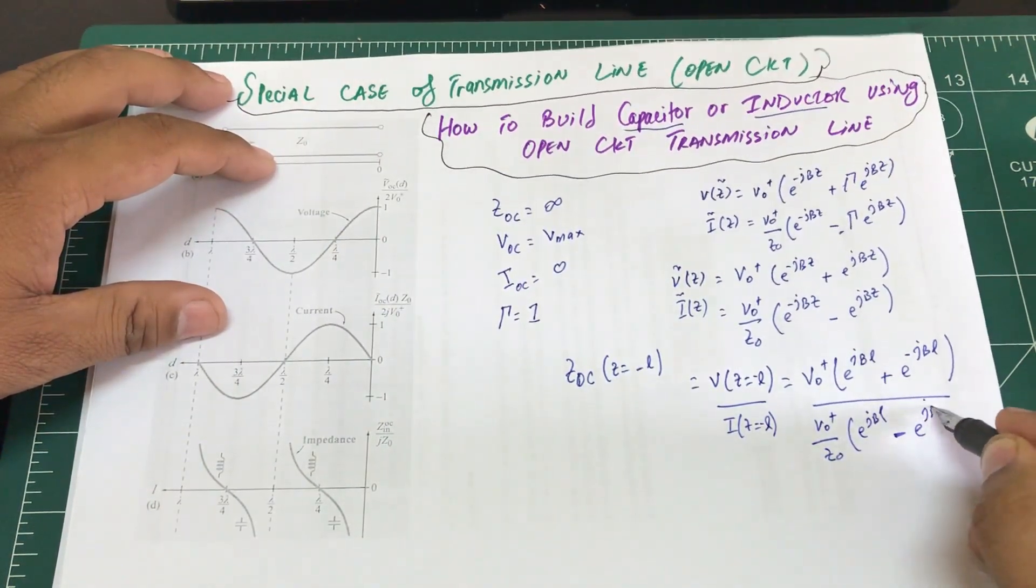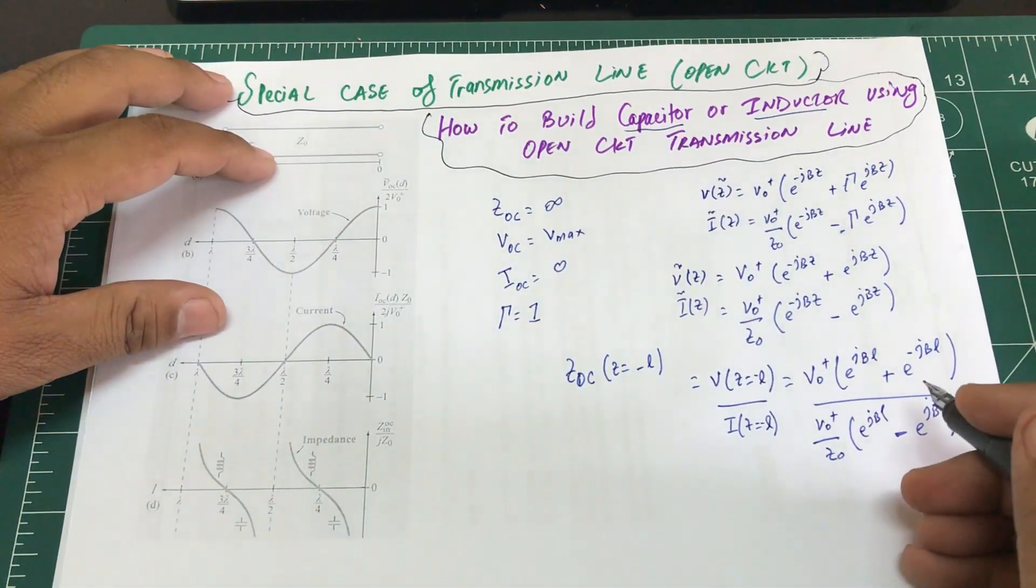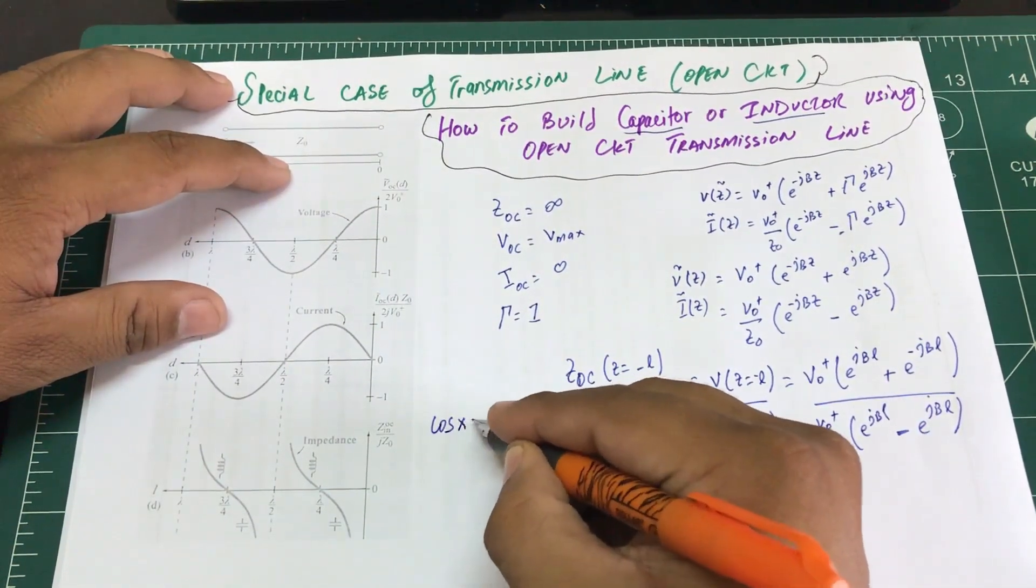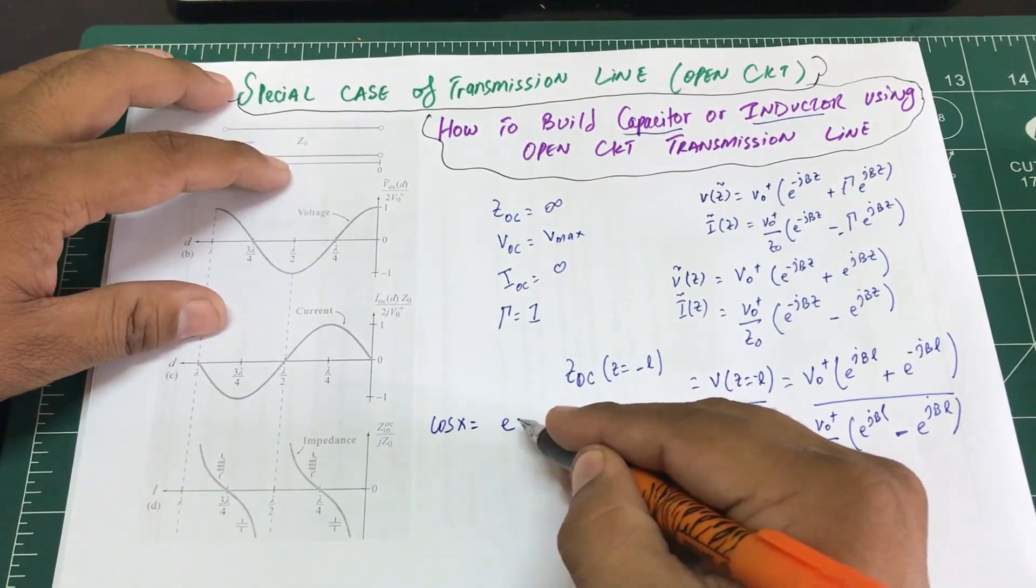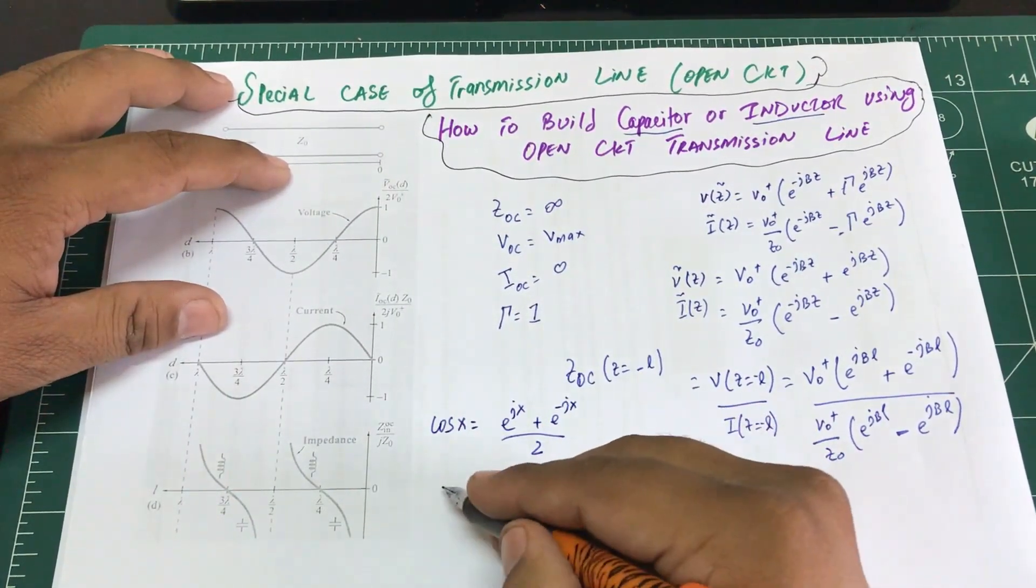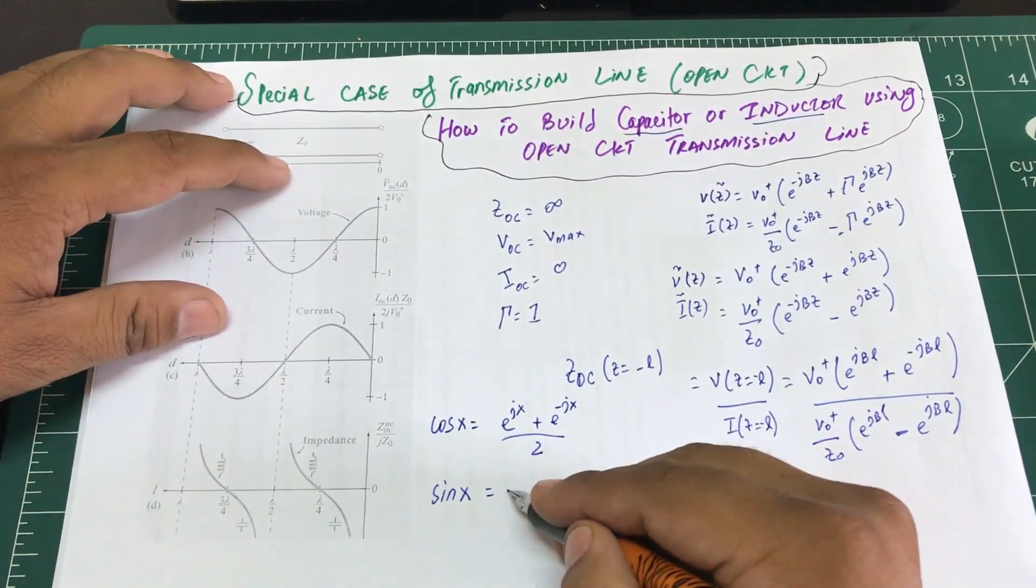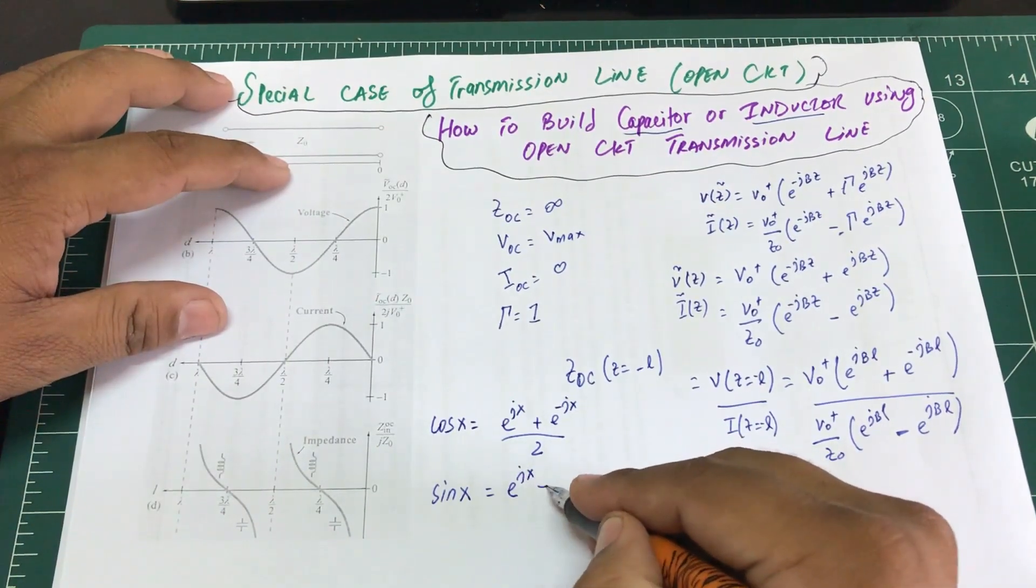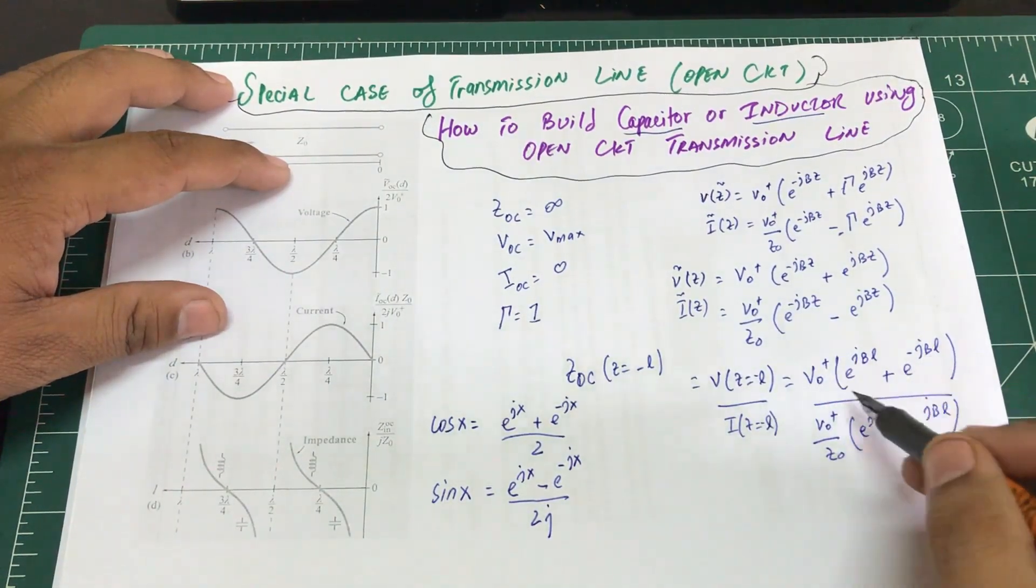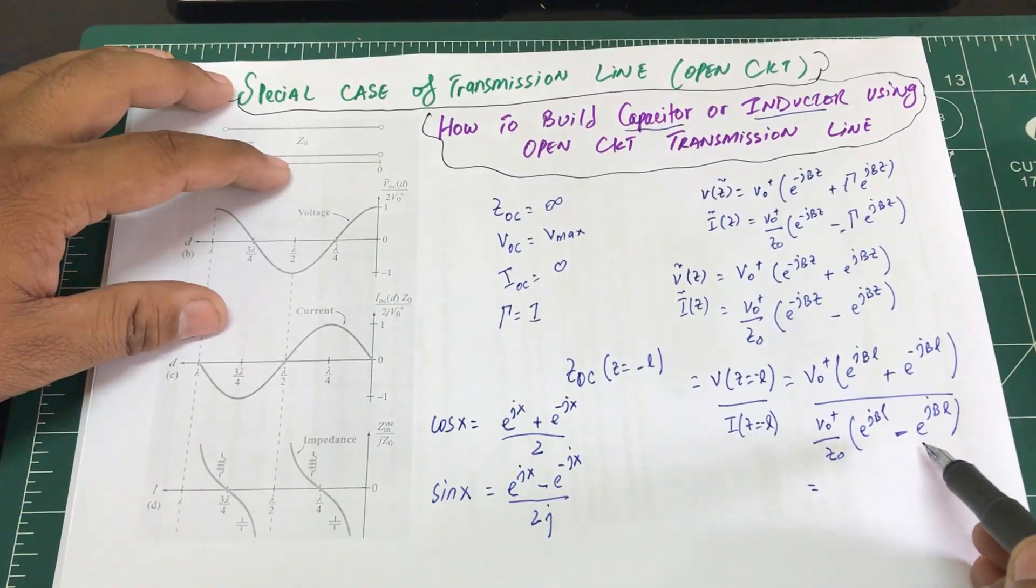I'm going to do exactly the same thing. Let's look at the definition of cos: cos(x) is given as [e^(jx) + e^(-jx)]/2. Sin(x) you will get [e^(jx) - e^(-jx)]/2j. So this looks like - the top looks like a cos based on the definition, and this looks like a sin.